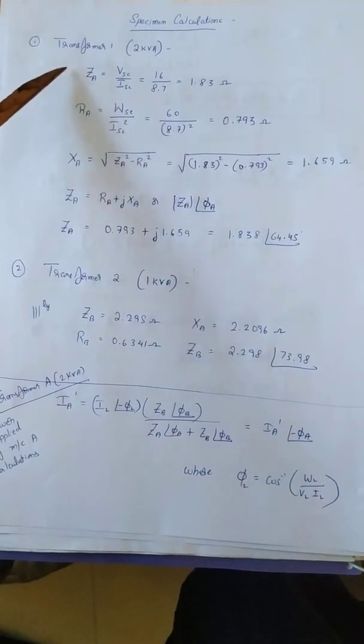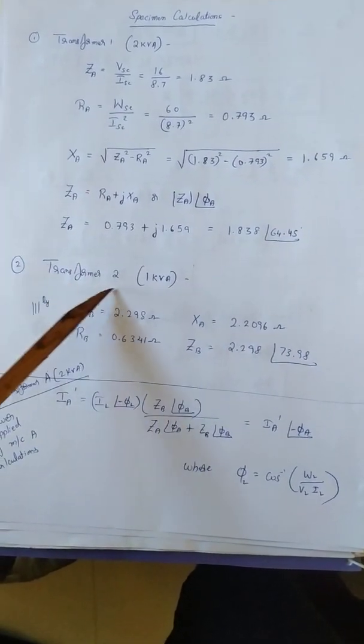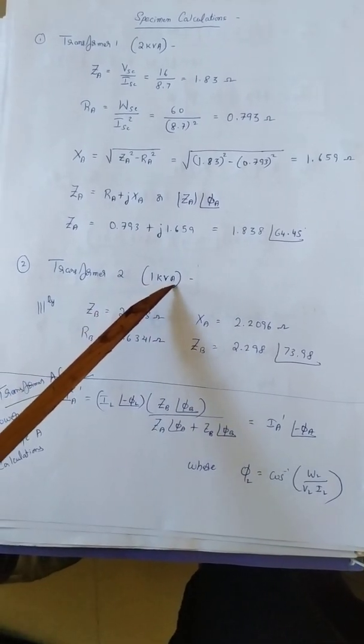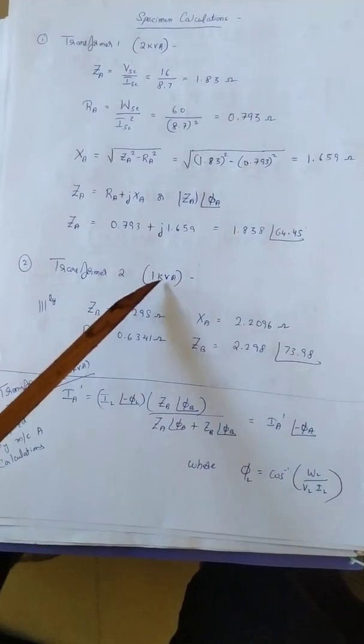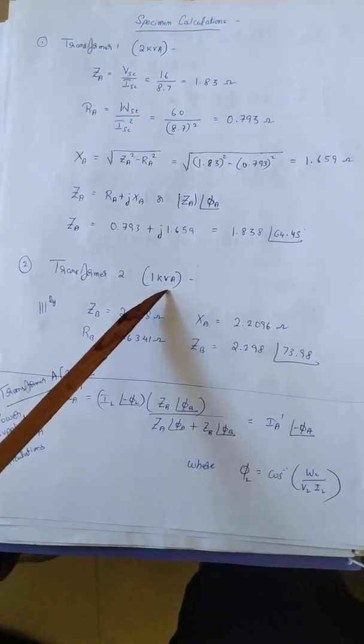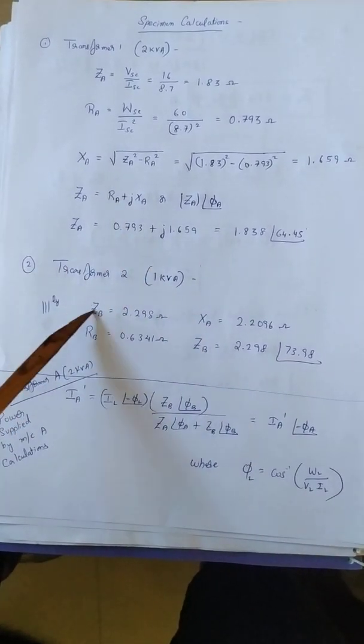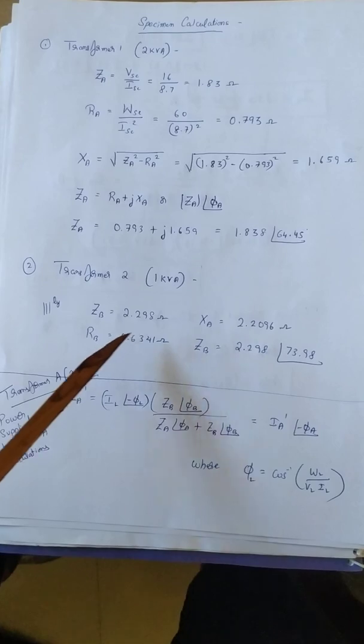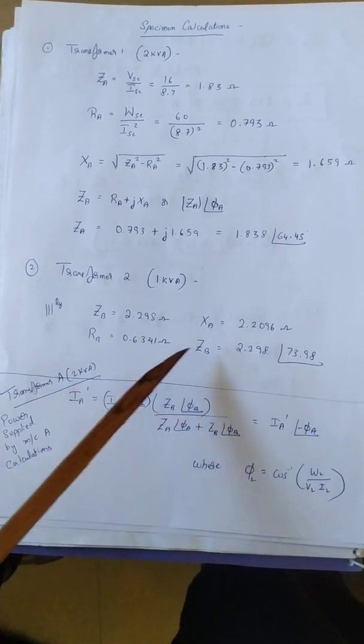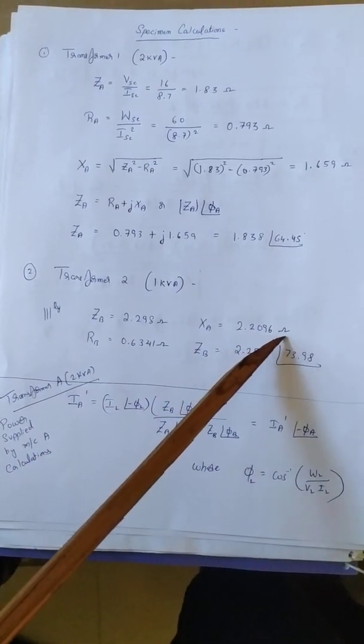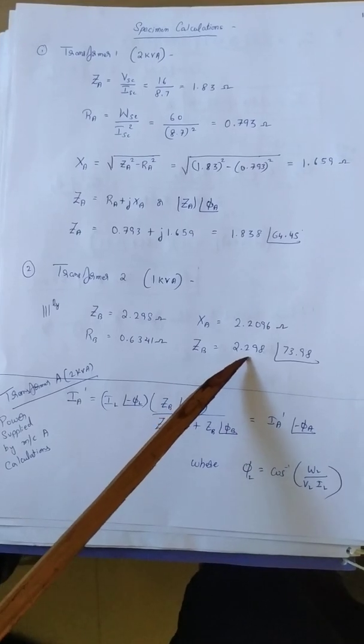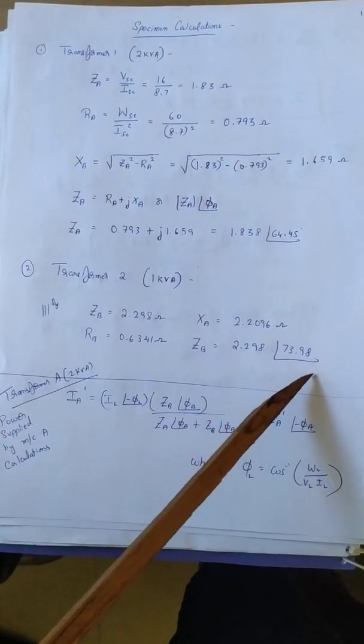Same calculations have to be performed for second transformer also, which is of the rating 1 kVA. From the short circuit test, whatever readings we have got, if we do the same calculations we get ZB 2.298, RB 0.6341, XA 2.2096, ZB 2.298 at an angle 73.98.